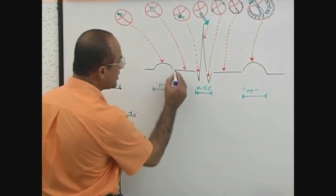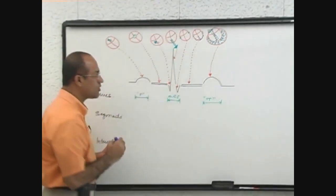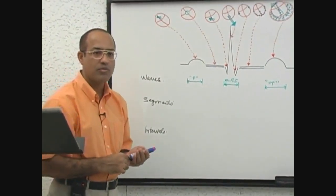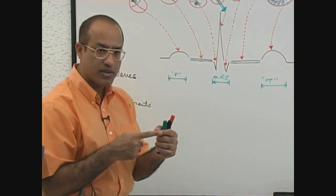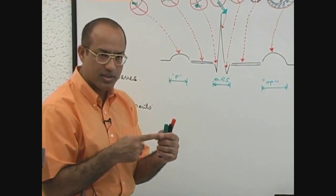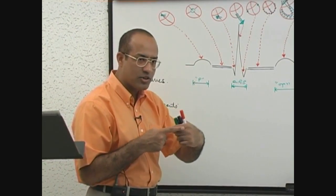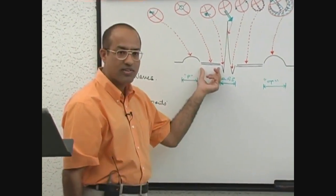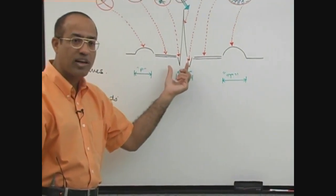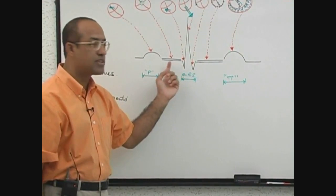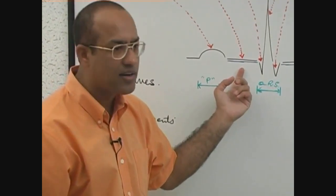In between the waves you find straight lines, which are called isoelectric lines. Straight lines are drawn by the needle when the needle of the machine is not fluctuating, meaning it is not recording any electrical activity. So during an isoelectric event, the needle is not moving but the paper is moving under the needle, so it makes a straight line. These isoelectric segments are the segments in between the waves, drawn when there is no fluctuation of the needle and electrodes are not recording any significant electrical activity in the heart.